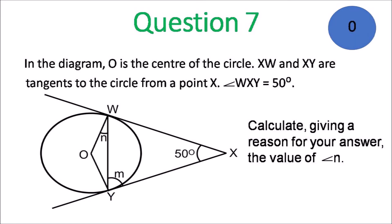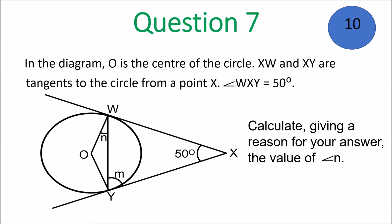We move on to question 7: calculate, giving a reason for your answer, the value of angle N. The diagram shows O is the center; XW and XY are tangents to the circle from point X, and angle WXY is 50 degrees. Use that to help you solve it. When you give your answer, you have to give a reason for it to get full marks — we want all of the points.